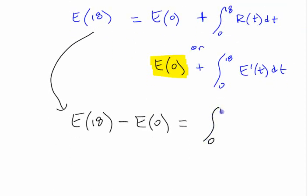What's left on this side? 0 to 18 of R of T, DT. This is the rate of change of E, right? This is how we were evaluating integrals, right?